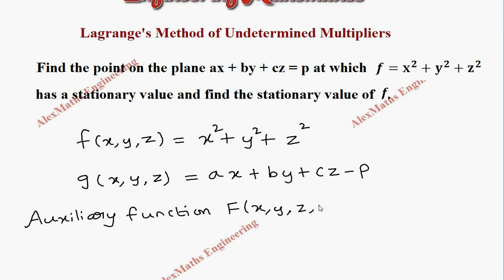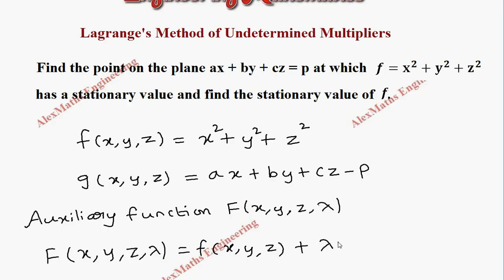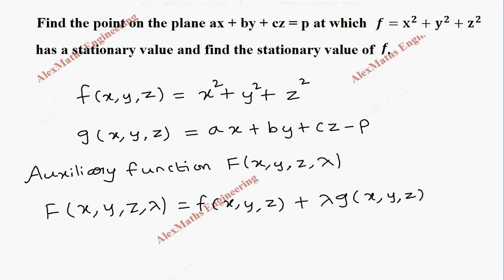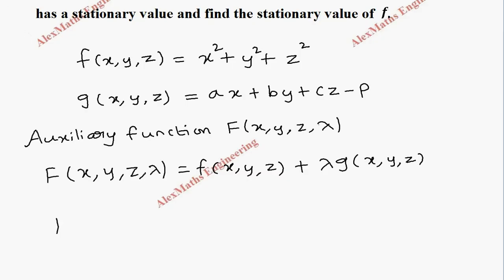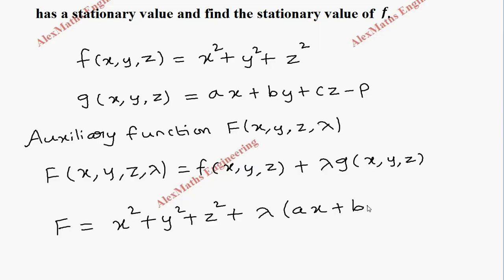The auxiliary function is capital F(x, y, z, lambda), and capital F is made up of two parts: f(x, y, z) plus lambda into g(x, y, z). So the auxiliary function becomes x square plus y square plus z square plus lambda into (ax plus by plus cz minus p).